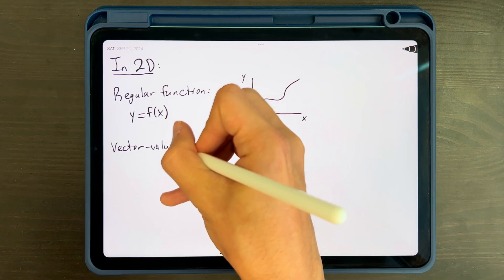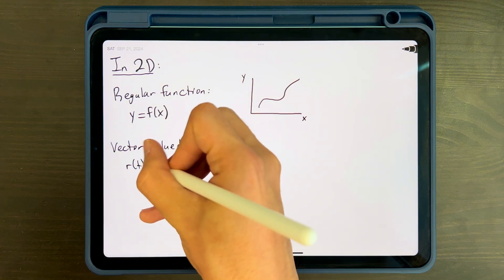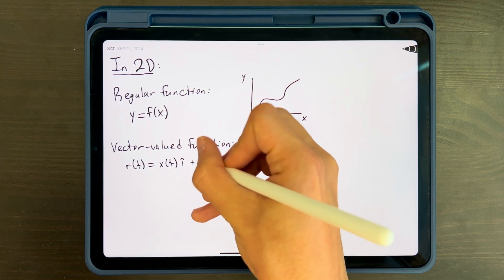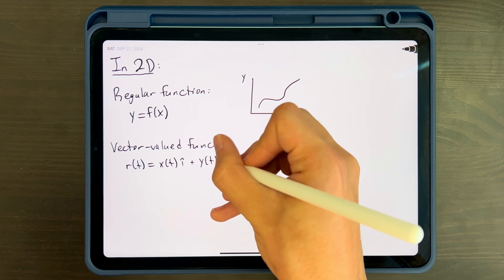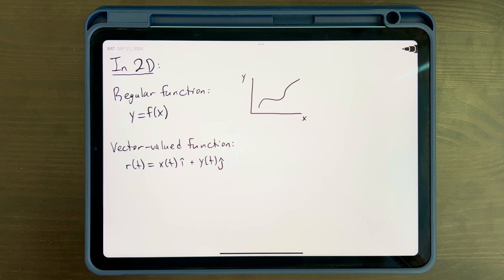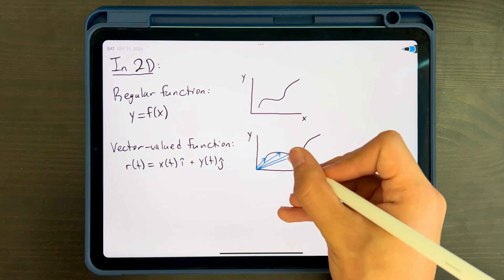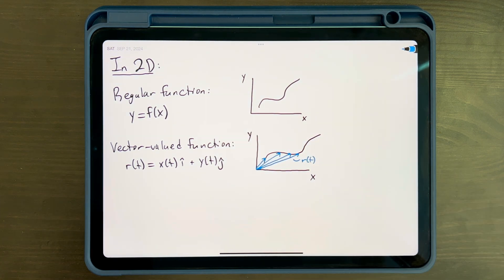By comparison, vector valued functions in 2D still graph lines, but are written as r of t equals x of t i hat plus y of t j hat, where i hat and j hat represent unit vectors in the x and y directions respectively. It's nice to think about vector valued functions as outputting a vector from the origin to each point in space along a curve, which is why you'll often see this unit vector notation.